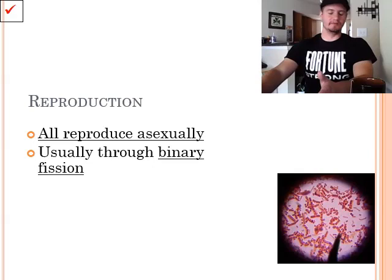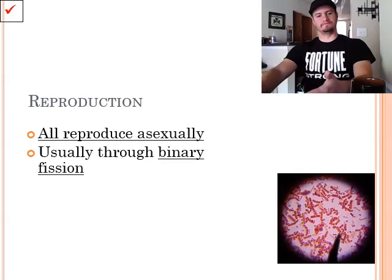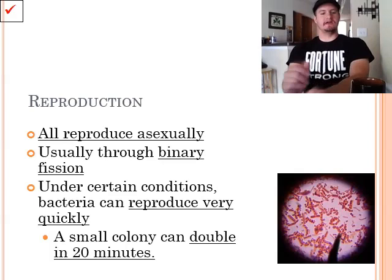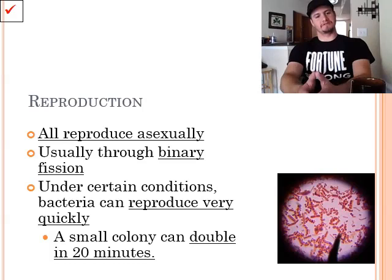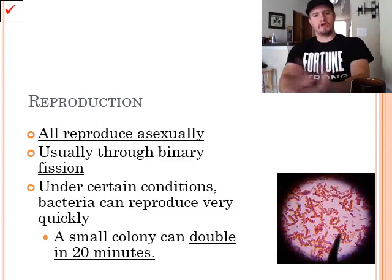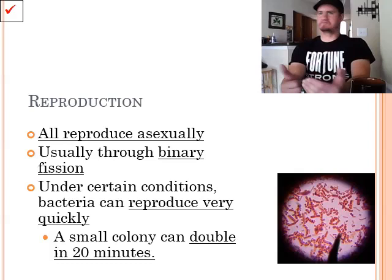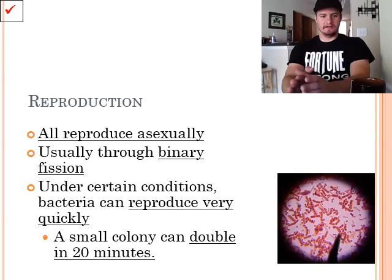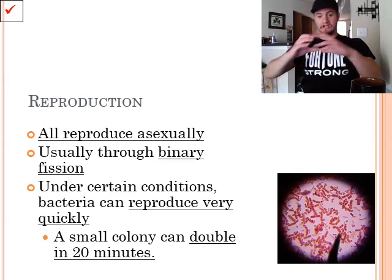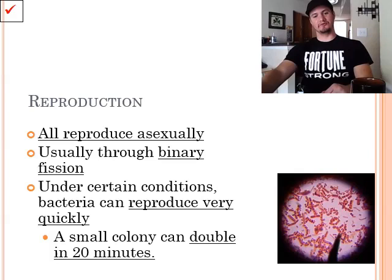So, bacterial reproduction. They all reproduce asexually, meaning only one parent. And they usually reproduce through something called binary fission. Under certain conditions, bacteria can reproduce incredibly quickly. A small colony can double in size in only about 20 minutes if given the right conditions. You'll be doing an experiment later on this year, actually coming up relatively quickly, where you will see this. We'll actually be growing our own bacteria. And in a matter of 72 hours, you will have a huge increase in the amount of bacteria that you have. Basically, you'll go from something you can't even see to something that takes up basically a whole petri dish.